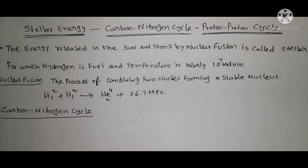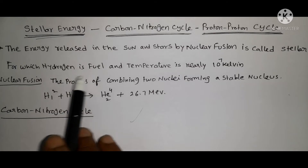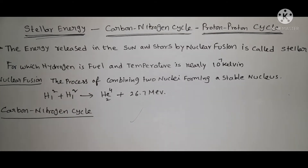In general, hydrogen is the fuel and the temperature is nearly 10 to the power 7 Kelvin. This has been occurring for millions and billions of years. Scientists proposed two types of cyclic process for the source of energy in the sun and stars. The first one is known as the carbon-nitrogen cycle and the second is the proton-proton cycle.